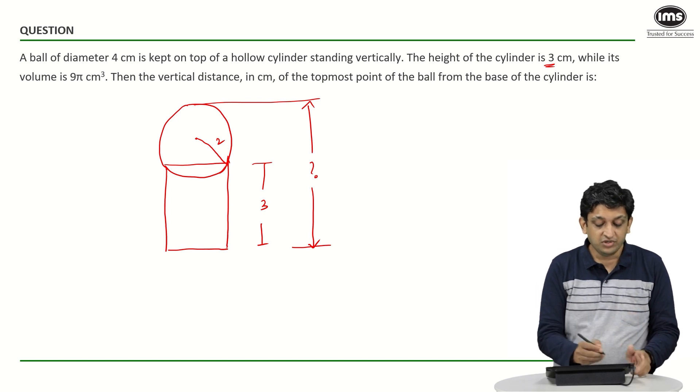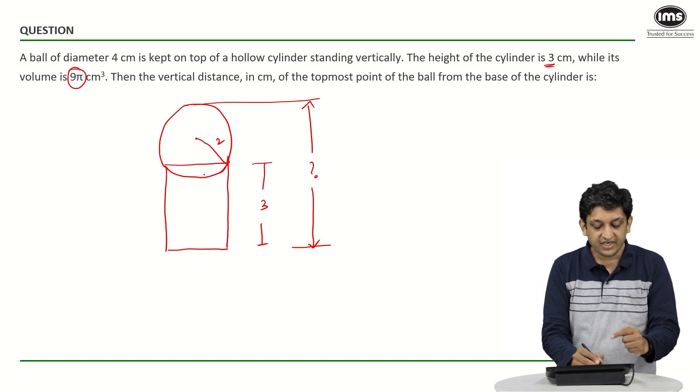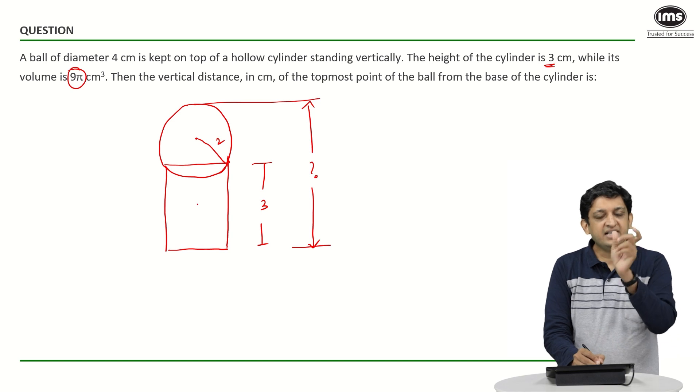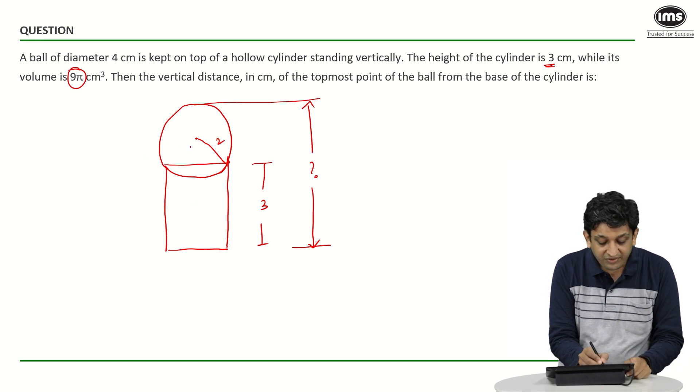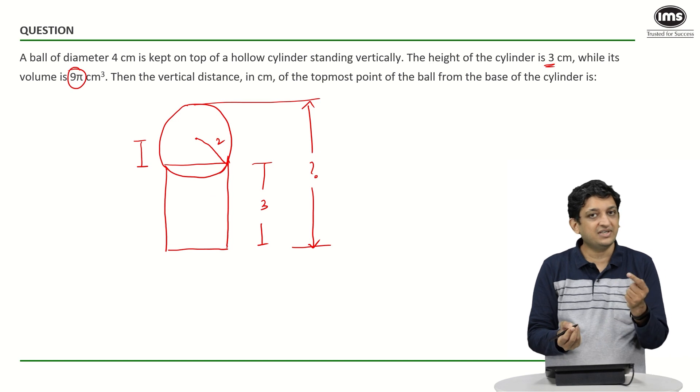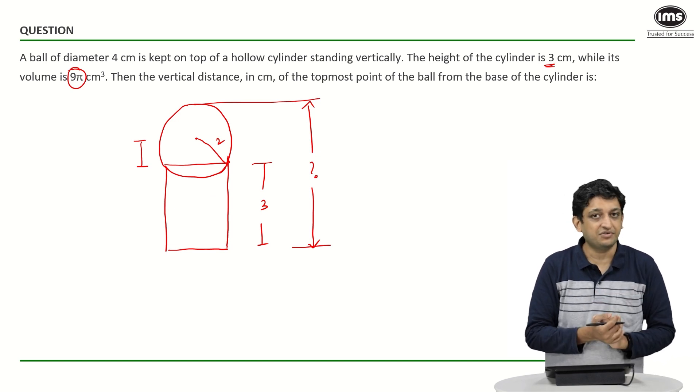So in this case what we need to do is we need to use this to figure out what exactly is going to be the radius of the cylinder. From that we will have to figure out what is this distance because once we figure that bit out we are sorted with the equation.